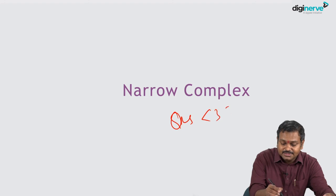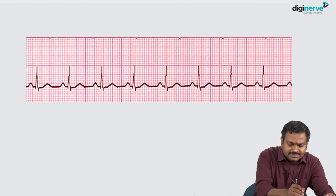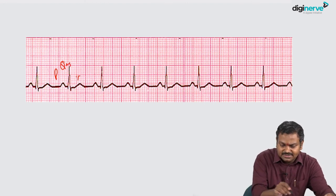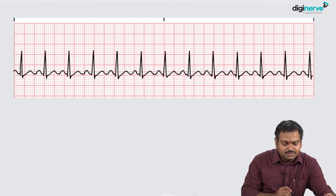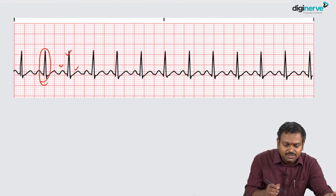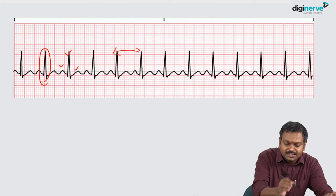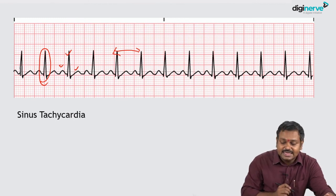Looking at the narrow QRS complex — where QRS width is less than three small squares — in normal sinus rhythm you have PQRST complexes coming regularly, with P followed by QRS followed by T, and regular RR intervals. In sinus tachycardia, the QRS complexes are still narrow and the P, QRS, and T are in order, but the RR interval is very short, meaning the heart rate is more than 100.